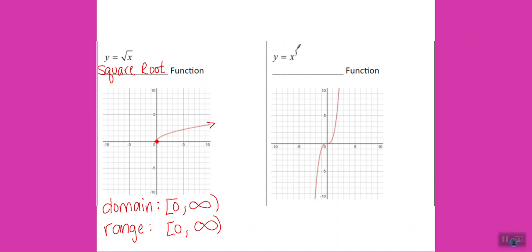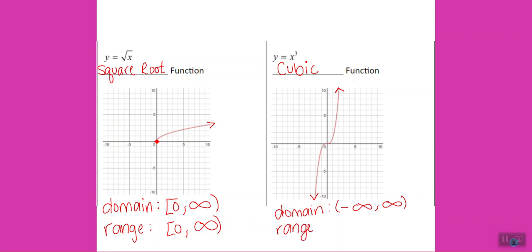Our next function has x cubed, which is why it's called a cubic function. This one has arrows on both ends — one arrow goes left forever and one arrow goes right forever. Its domain is negative infinity to infinity. For our range, one arrow is going down forever and one arrow is going up forever, so our range is also negative infinity to infinity.